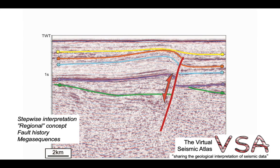So a quick illustration of a stepwise interpretation of an inversion structure from the North Sea. We've used the regional concept, deduced a fault history, and interpreted the stratigraphic record in terms of this faulting history.